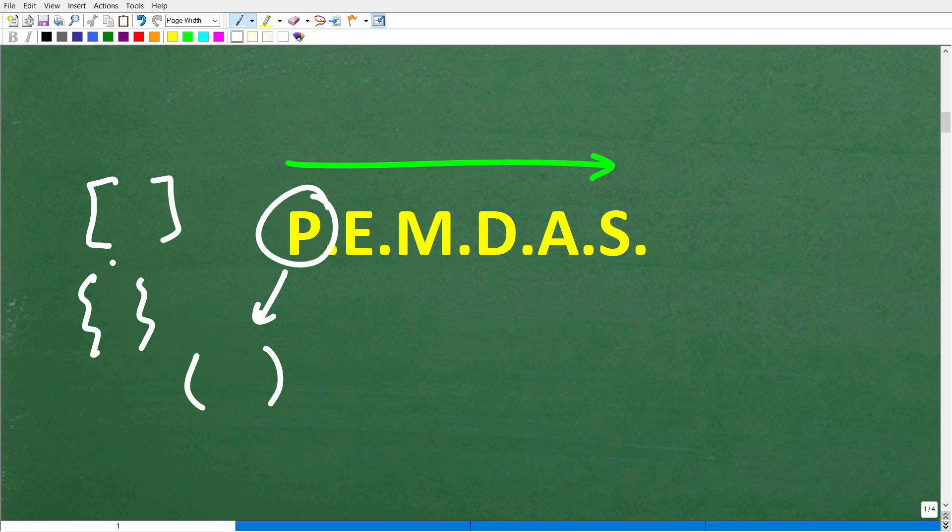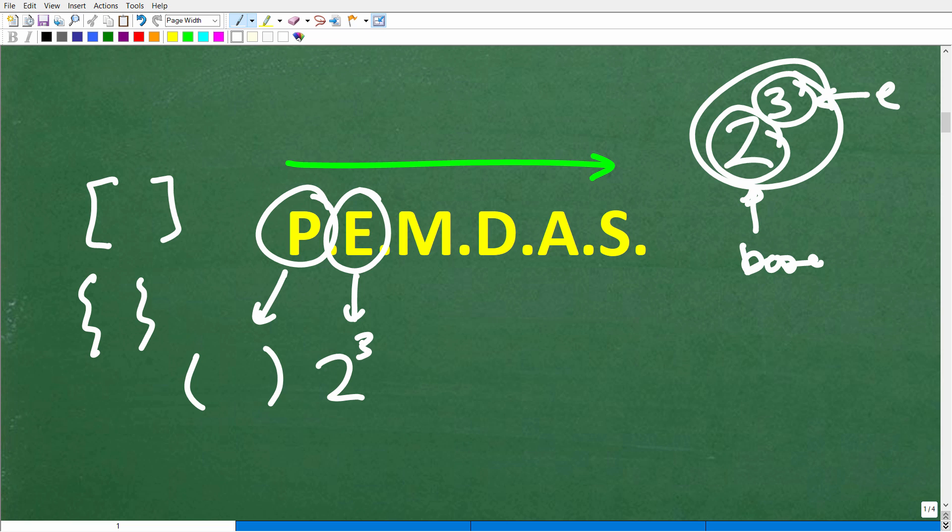The next thing we're going to do is E, and this stands for exponents. But really, you can think of this as a power. So if you have 2 to the third power, this number in the top right is called the exponent. So this 3 is the exponent, and this big number down here is called the base. The entire thing is a power, so 2 to the third power. E stands for exponents, but you're really thinking about powers. Now, before I explain the rest of this checklist, let me just tell you what the letters stand for. M stands for multiplication, D stands for division, A stands for addition, S stands for subtraction.